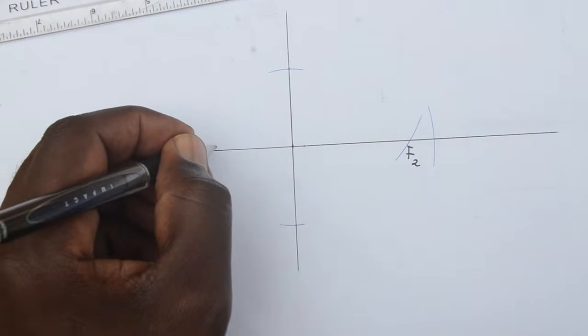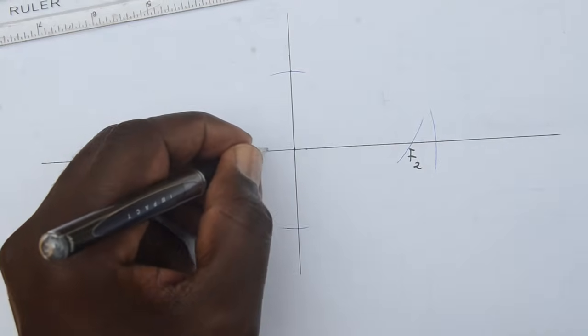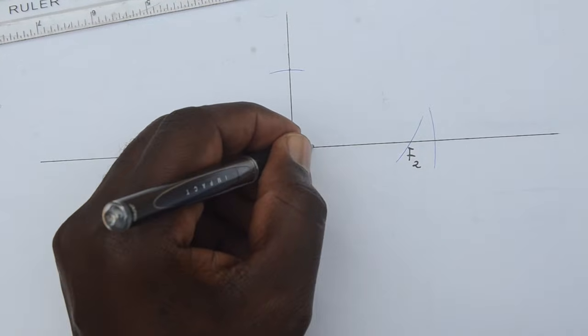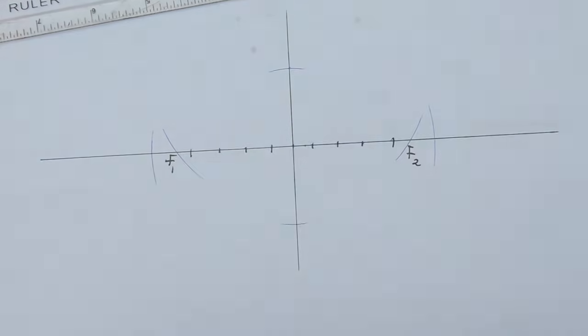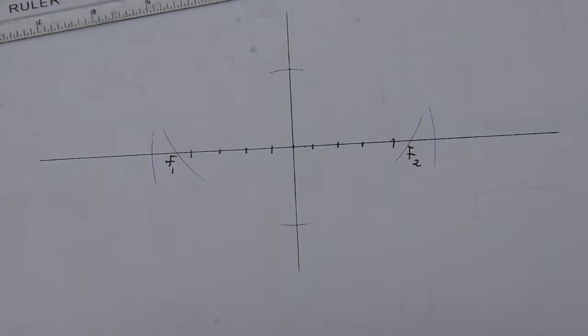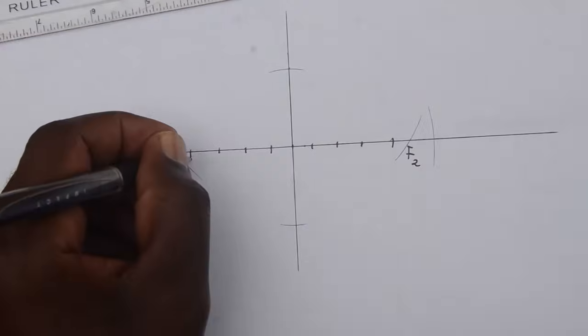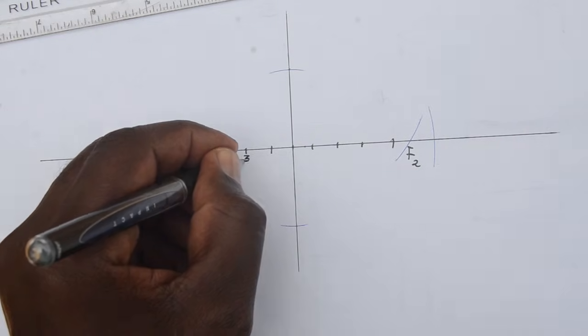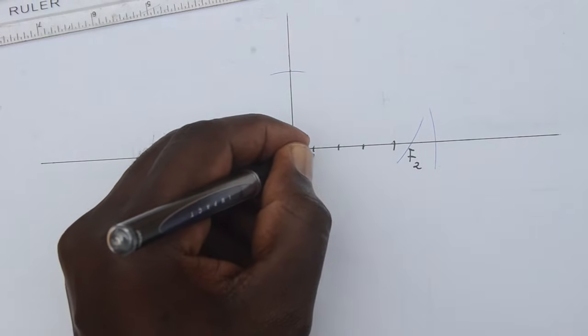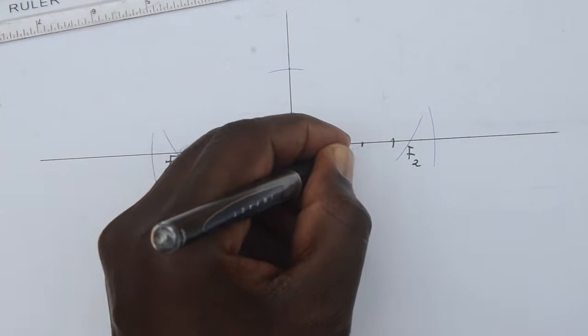In between the focal points, mark off divisions. These divisions can either be equidistant or they may not. Now the divisions that you mark off should ideally be the same on the left and on the right, and these are going to act as the centers to give you the points of your ellipse.